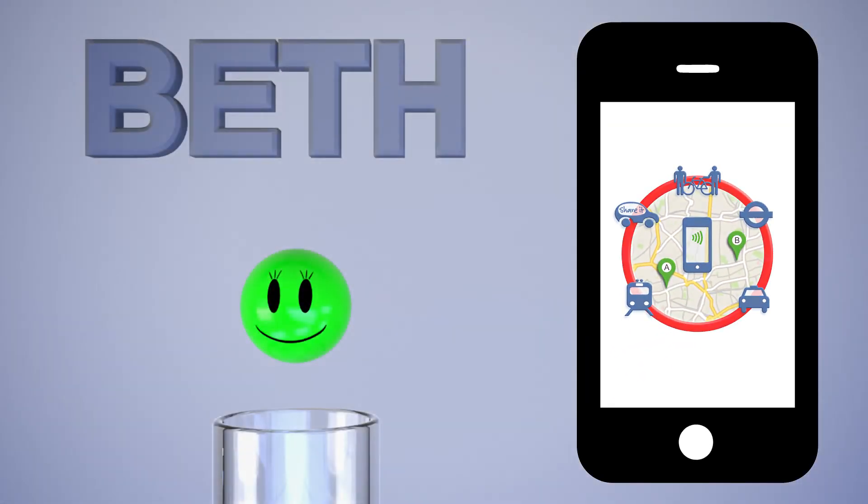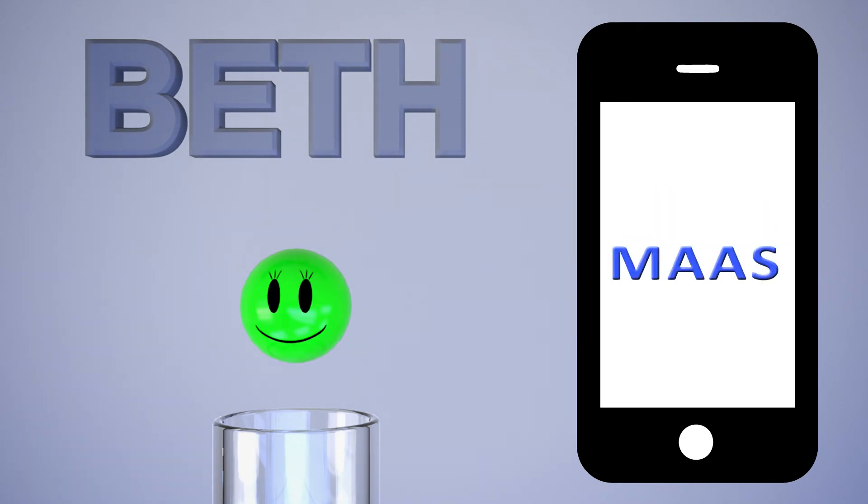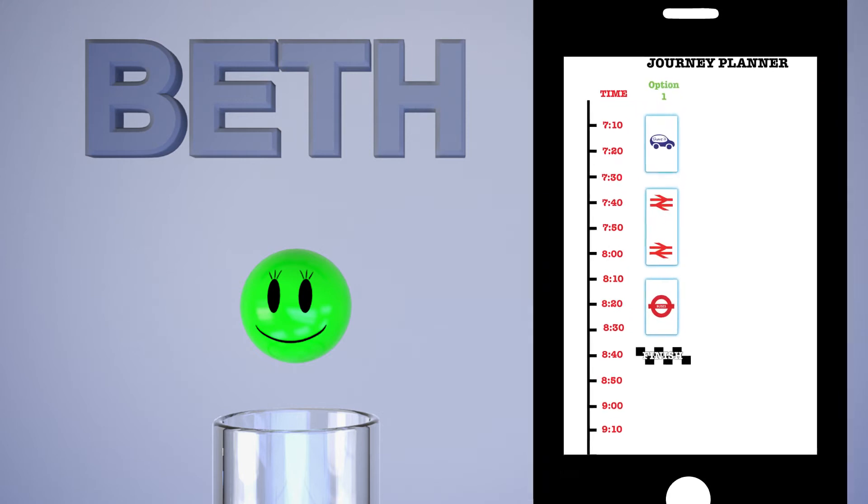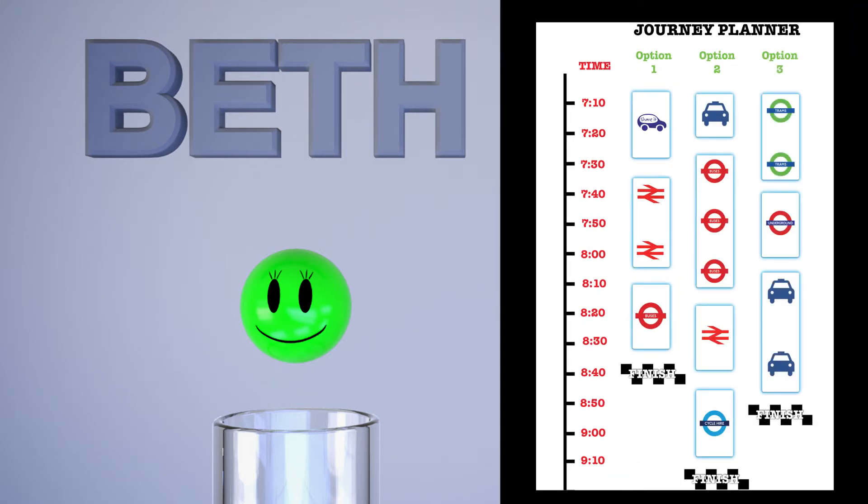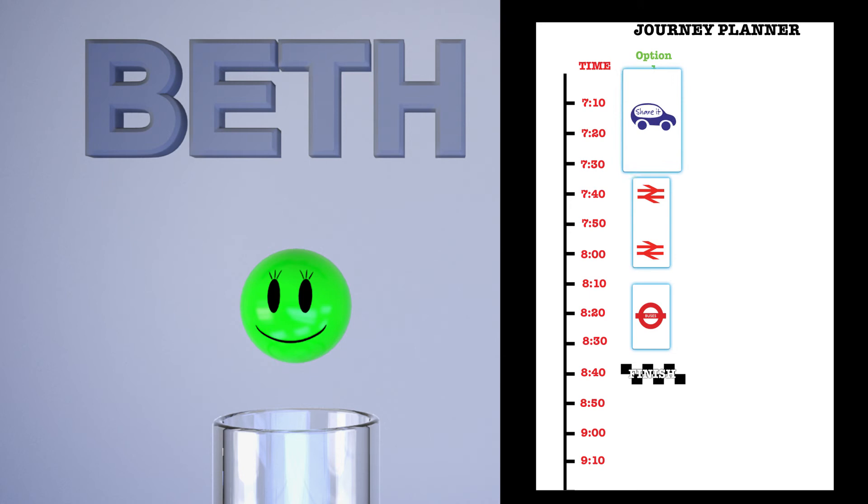Unlike Bob, Beth uses MAS. MAS provides Beth with a variety of mobility options she could take to work. Today, Beth chooses a combination of car sharing, rail and bus as it provides the fastest route.